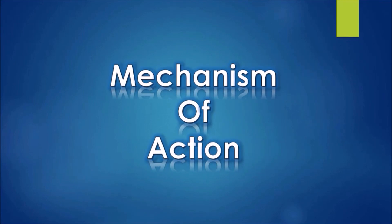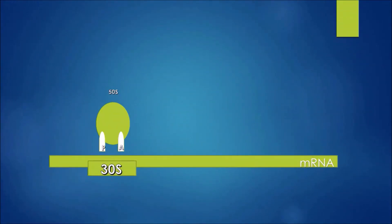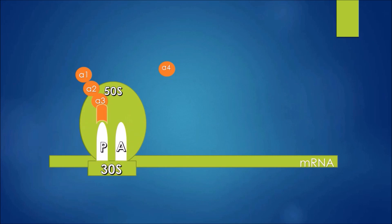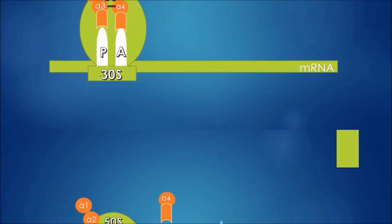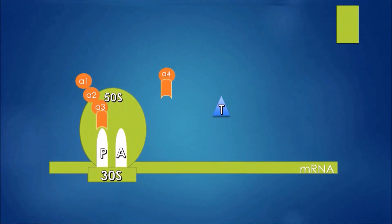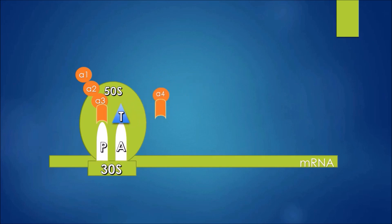Mechanism of action: Normally, aminoacyl tRNA binds with the 30S ribosome. Tetracyclines prevent the binding of aminoacyl tRNA with the 30S ribosome and thereby prevent protein synthesis.